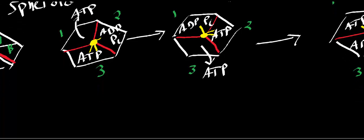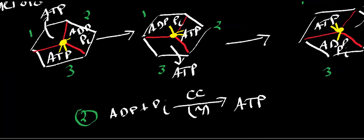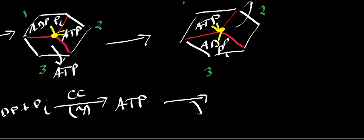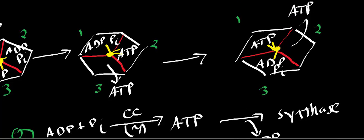For spheroid subunit two, the sequence is: first, ADP and phosphate bind; then a conformational change occurs with respect to the gamma subunit; then ATP is bound at the site; then as the gamma shaft moves to a different position relative to that subunit, ATP dissociates. It turns out that ATP dissociation is actually the rate-determining step of ATP synthase.